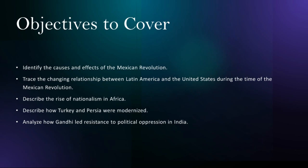Moving on, we'll be describing how Turkey and Persia were modernized. In the early 20th century, both Turkey, formerly the Ottoman Empire, and Persia, today known as Iran, underwent significant reforms aimed at modernizing their societies and institutions. In Turkey, Mustafa Kemal Ataturk implemented a series of sweeping reforms, including the adoption of Western legal codes, secularization of the state, and promotion of education and women's rights, transforming Turkey into a modern, secular republic. In Persia, Riza Shah Pahlavi pursued similar reforms, modernizing the military, infrastructure, and educational system, albeit in a more authoritarian manner.